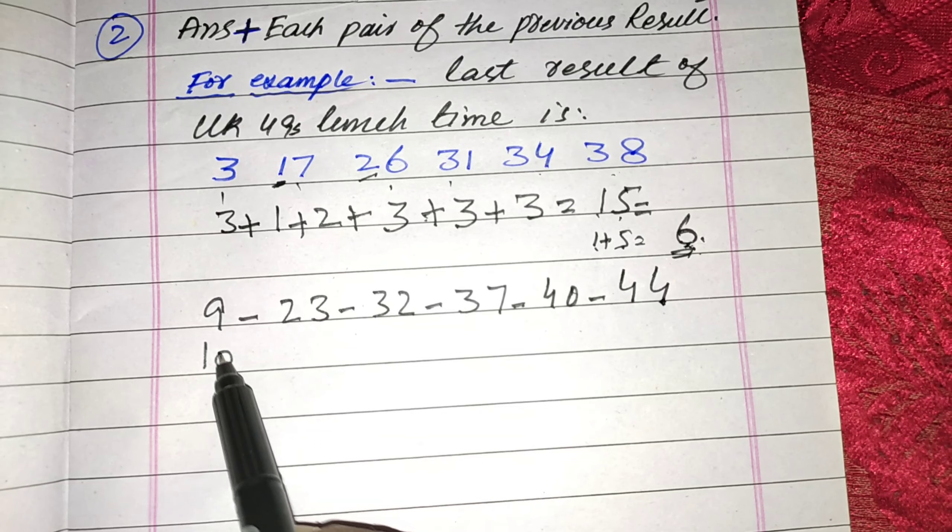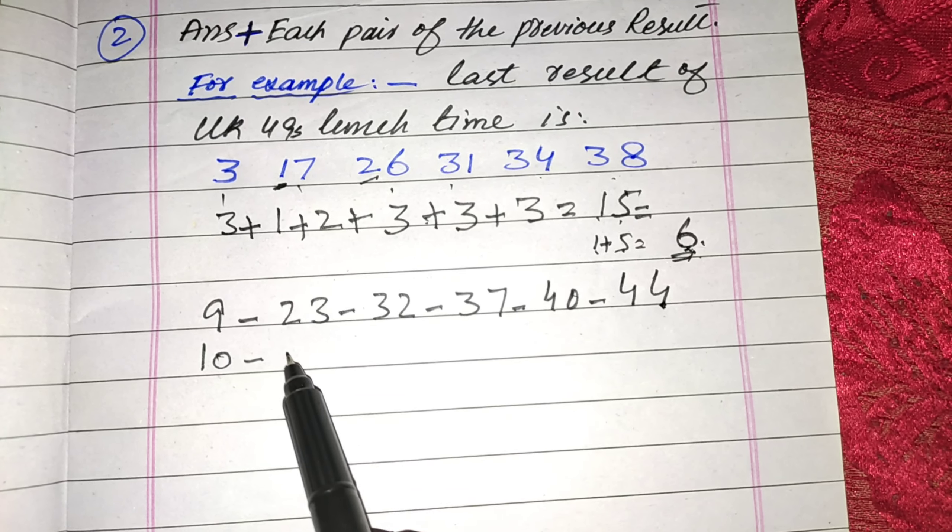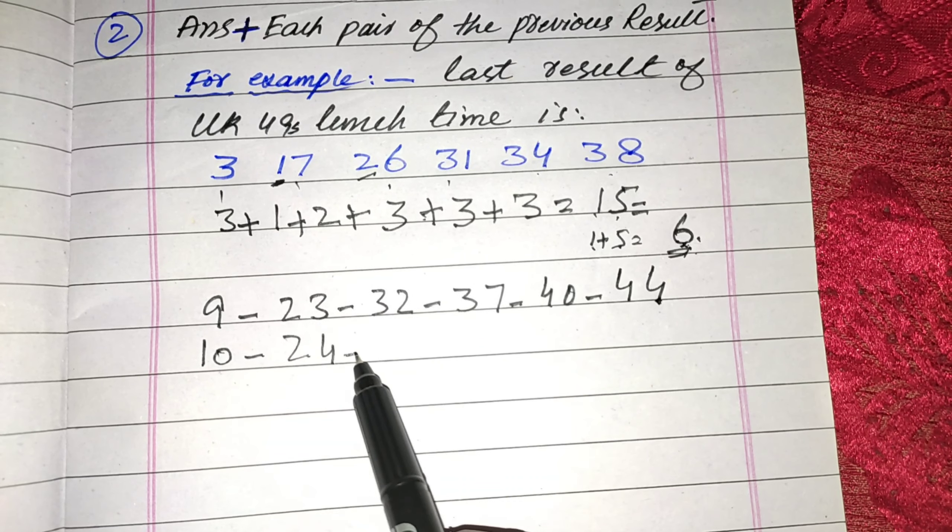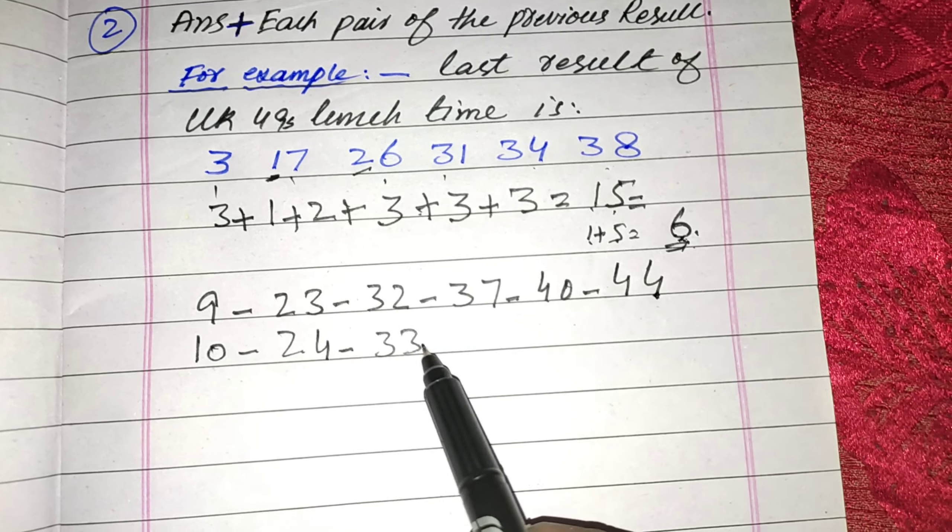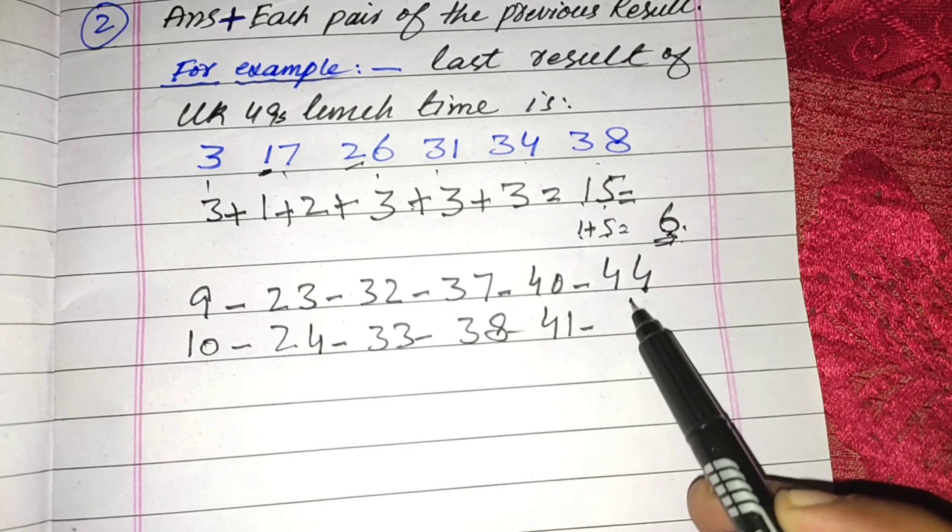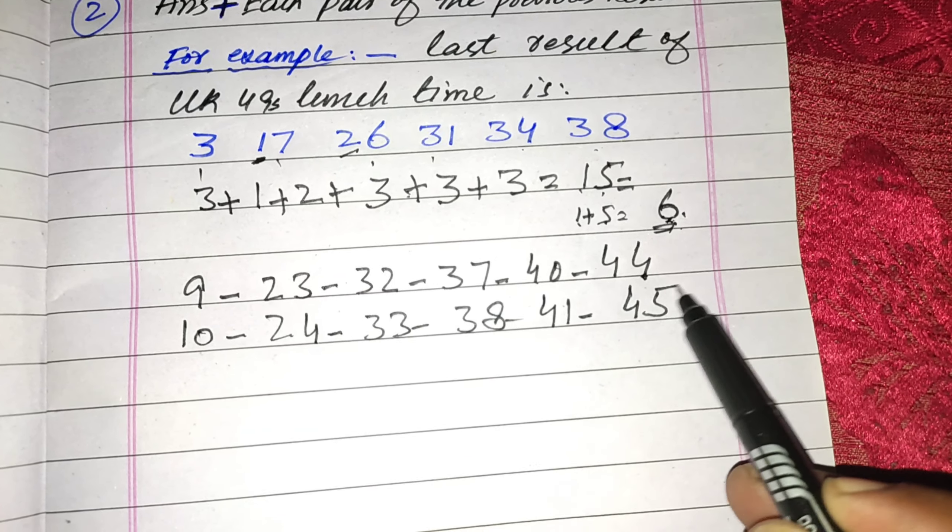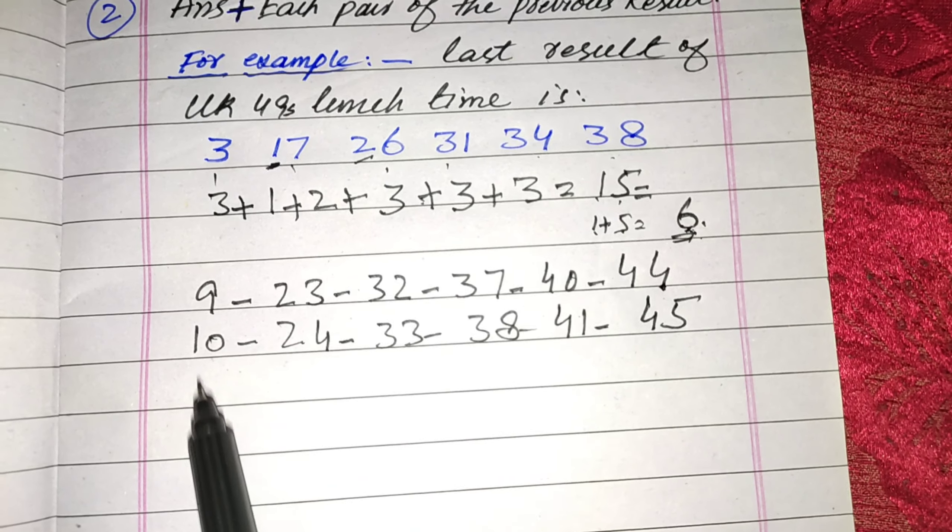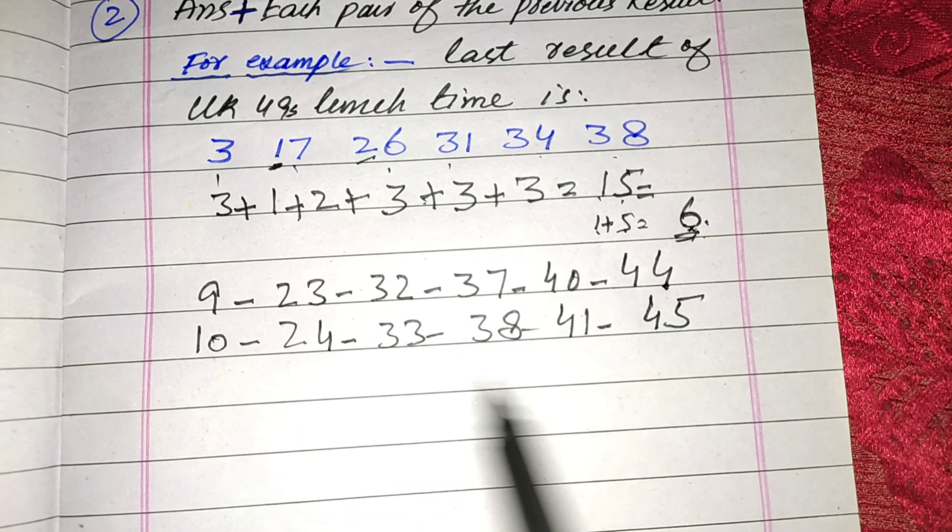9 increase 1 time is 10, 23 increase 1 time is 24, 33, 38, 41, and 45. Last step is increase 2 times from all these pairs.